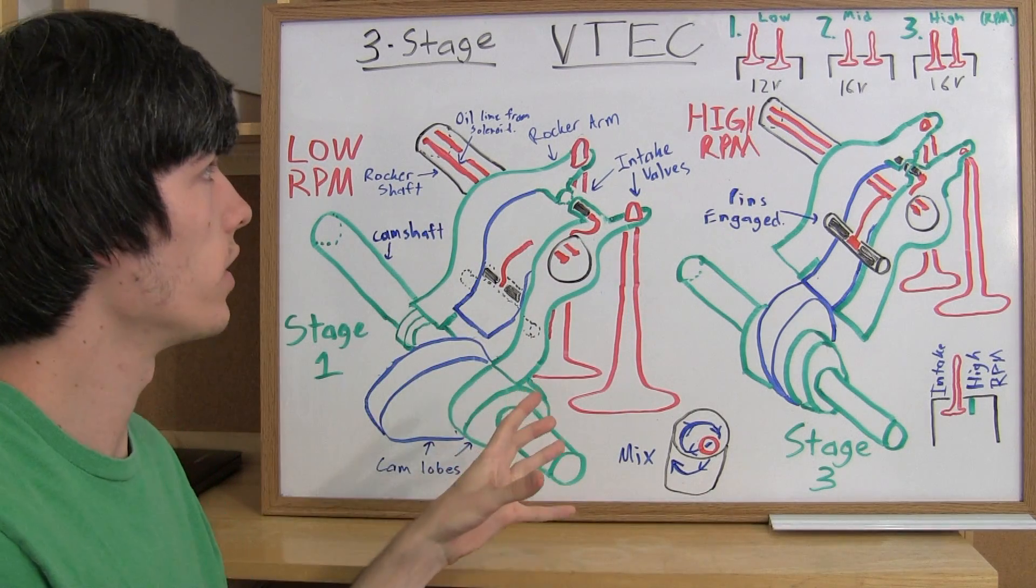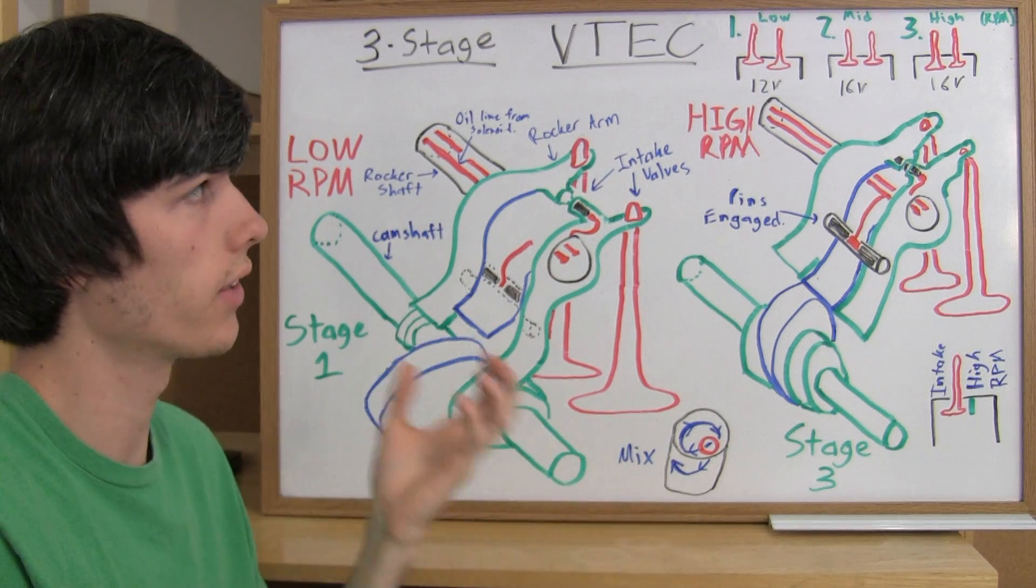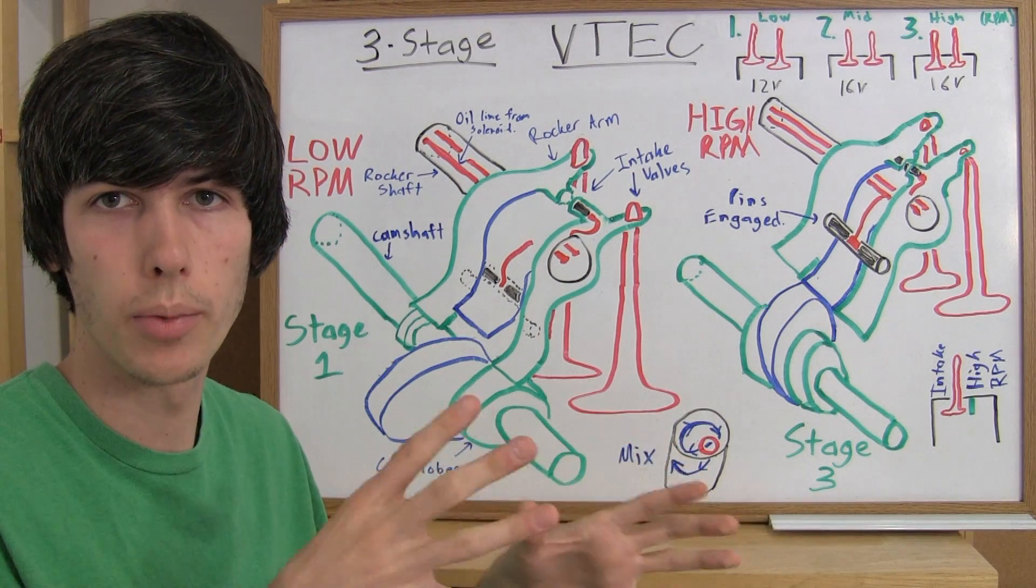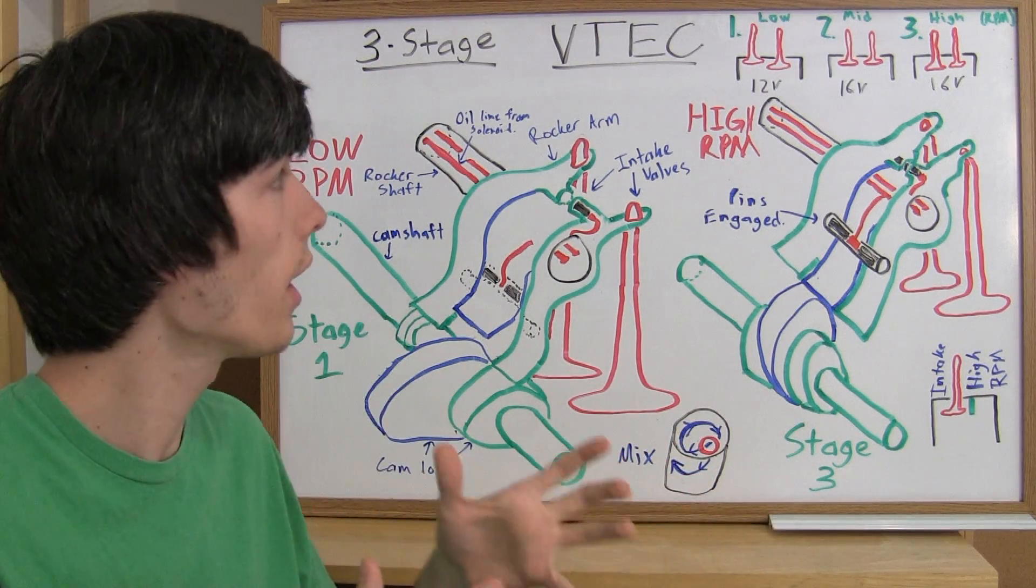Now the difference between three-stage VTEC and regular VTEC is that a normal VTEC has two operating modes, one for low to mid-range RPM and one for high-range RPM.